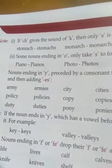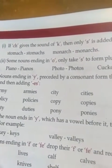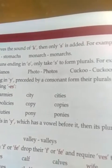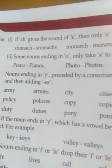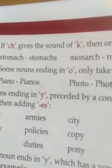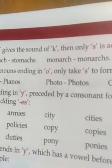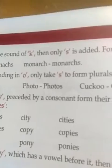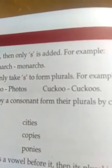Some nouns ending in 'o' only take 's' to form plurals. For example: piano → pianos, photo → photos, cactus → cactuses.